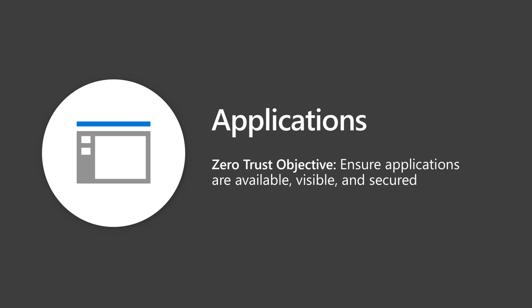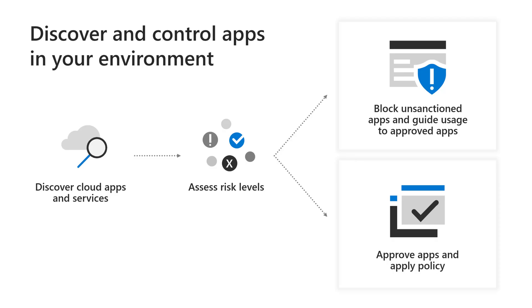Applications and APIs provide the interface for how I consume my data. We have to take into account what kind of apps users are using — cloud apps storing data everywhere. It's about going out and discovering those apps that users are using, not just behind the firewall but outside the firewall, evaluating those apps and then blocking access — even blocking dynamically — or approving access and applying policy to those cloud apps.